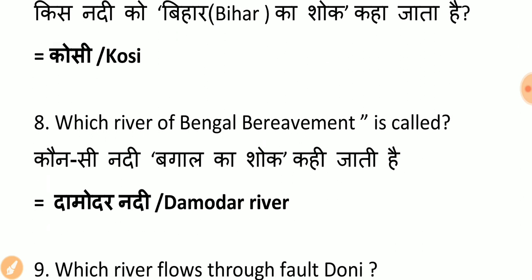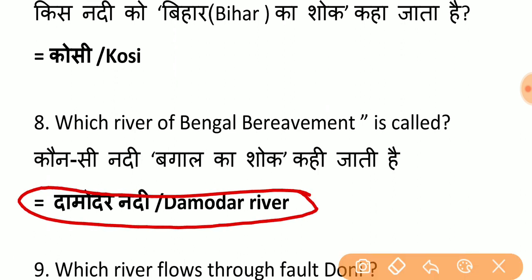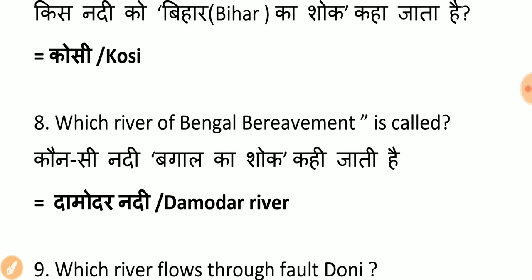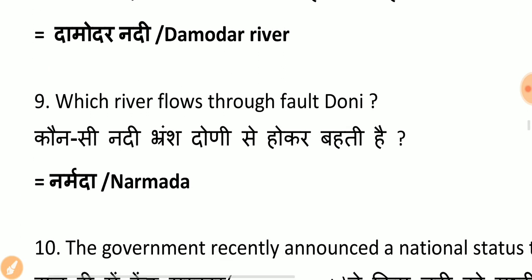Which river is called the Sorrow of Bengal? Just as Kosi river is called the Sorrow of Bihar, similarly Damodar river is called the Sorrow of Bengal.